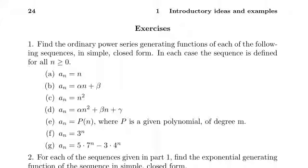Hello and welcome to part number 9 of my read and work through of Herbert Wilf's Generatingfunctionology. I finished reading through chapter 1 and now I'm going to start the exercises at the end of chapter 1. So let's see exercise 1: find the ordinary power series generating functions of each of the following sequences in simple closed form. In each case the sequence is defined for all n greater than or equal to 0. And the first one is a_n equals n.